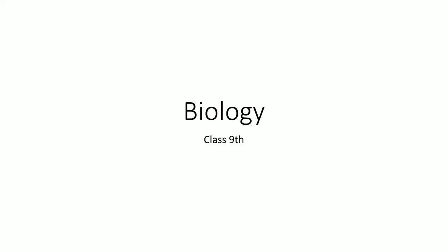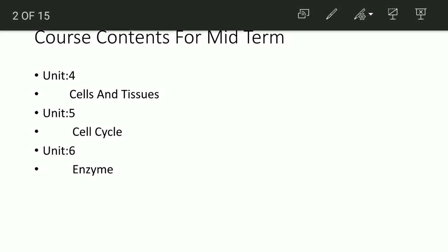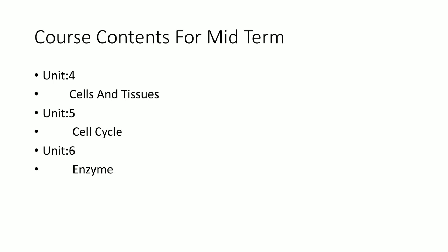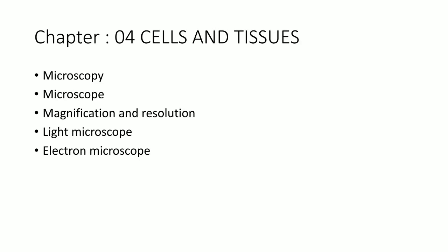Today is the first lecture for the session of class 9. We have completed the starting units of your biology book in class 8: unit 1 — introduction to biology, unit 2 — solving a biological problem, and unit 3 — biodiversity. The course content for the midterm in class 9 is unit 4 — cells and tissues, unit 5 — the cell cycle, and unit 6 — enzymes. Today we are going to start with unit 4, cells and tissues, covering microscopy, microscope, magnification and resolution, light microscope, and electron microscope.